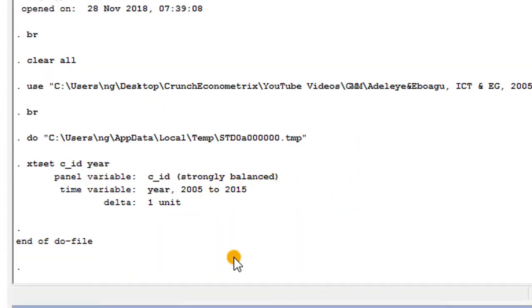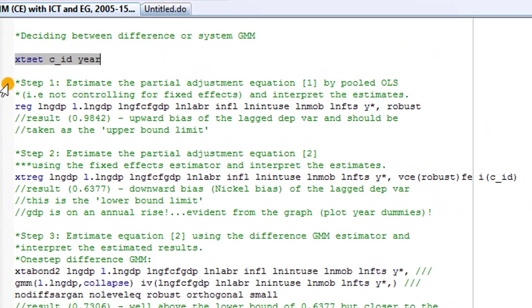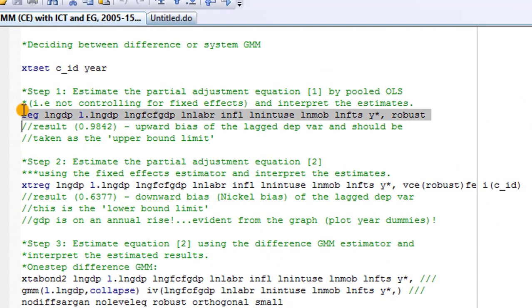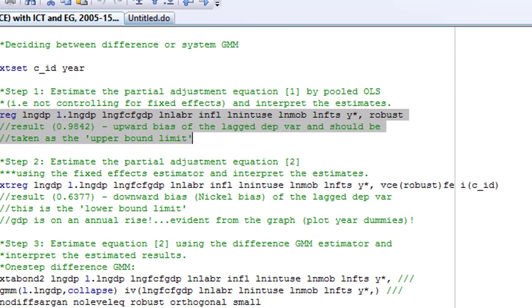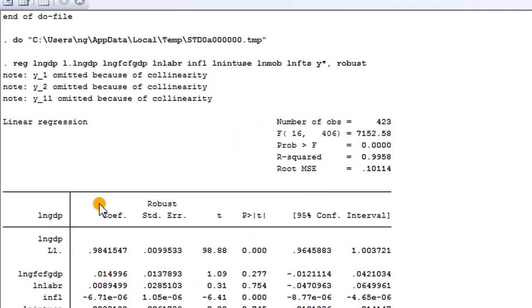Step one, let's estimate this using pooled OLS. This is the command for pooled OLS. I execute this and here's the output from the pooled OLS. Our main coefficient of interest is that of the lag dependent variable, and here you can see that the coefficient is 0.984. Please make sure you note down this figure, 0.984.